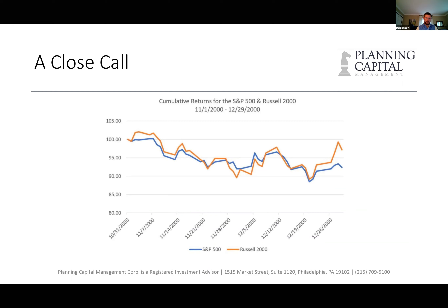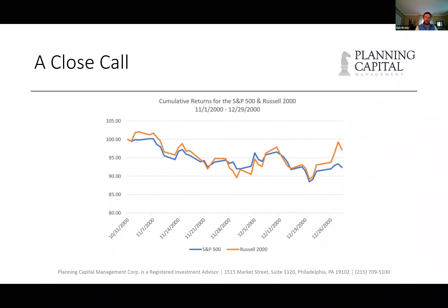Coming out of an election, this is looking at November 1, 2000 through the end of the year — the final two months of 2000. If you remember 2000, that was the contested results of the Bush-Gore election. Typically going into the election, no matter how contentious it looks, markets are up for the most part. Coming out of the election is another story — in that case, with a close and contested election, markets were down going into the end of the year.